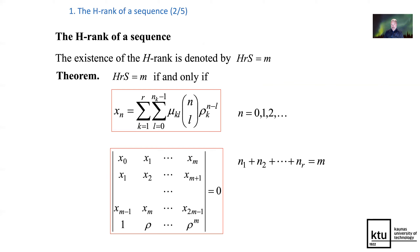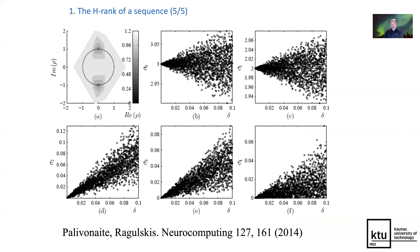It is also possible to use this concept and these techniques for approximating time series contaminated by external noise. Here are some examples showing how the H-eigenvalues approximate the exact eigenvalues when additive noise is contaminating the original sequence.